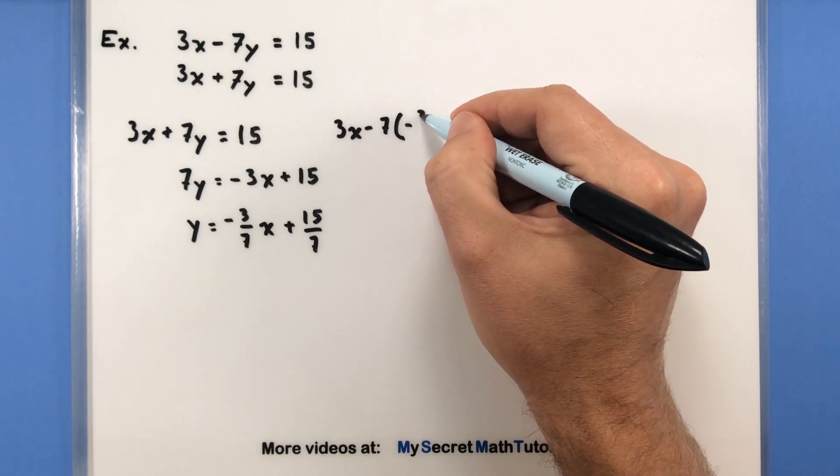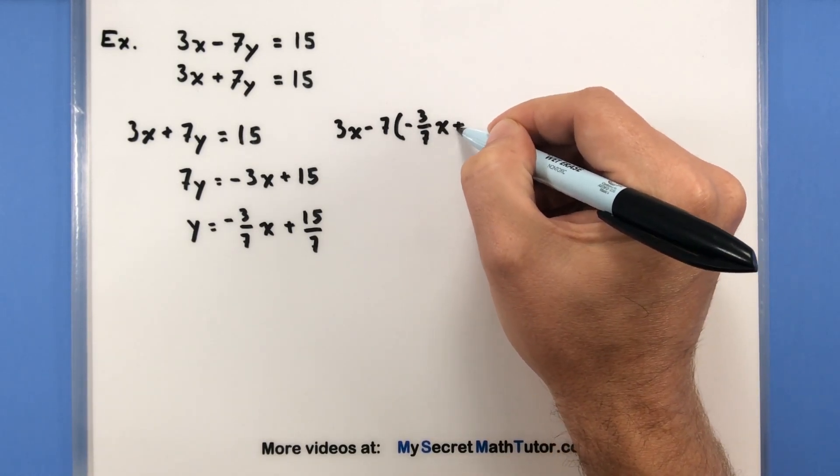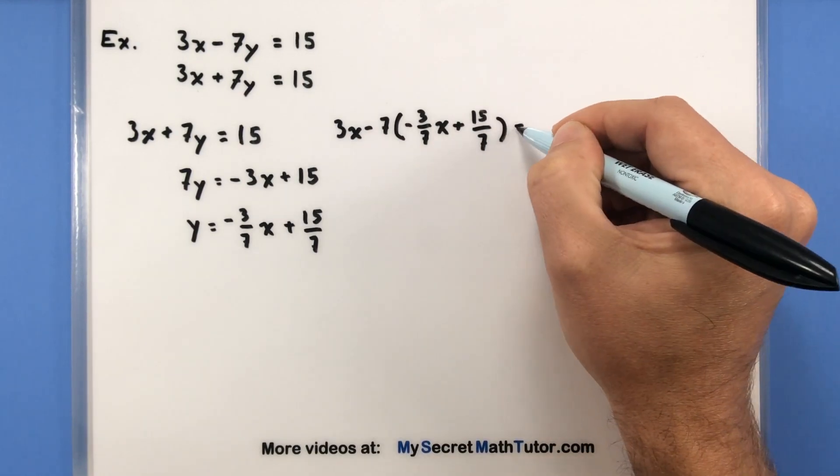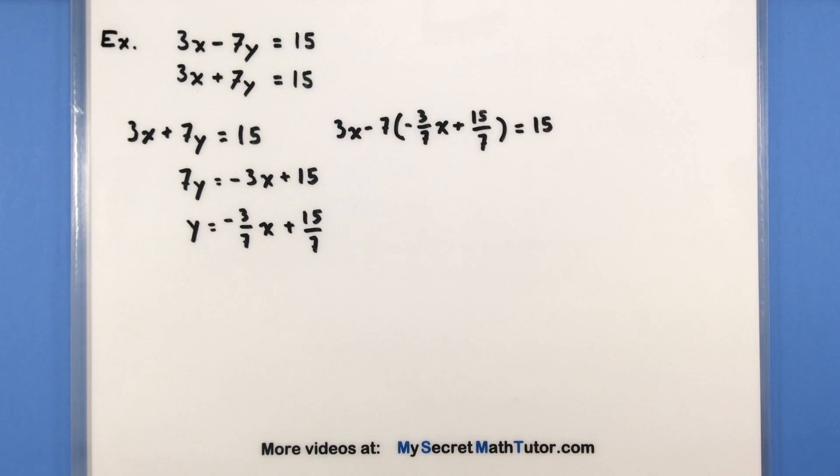and we'll replace it with what y is equal to. So all of that looks good. Still equal to 15. And now we want to solve this for the remaining variable.